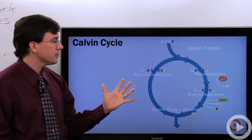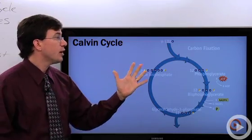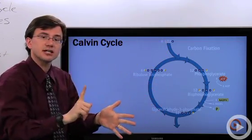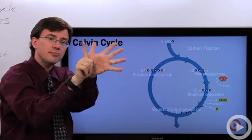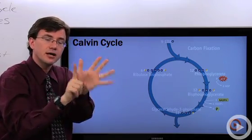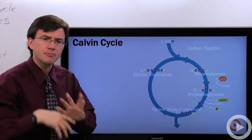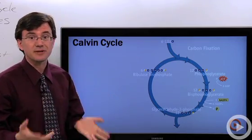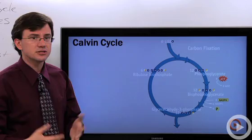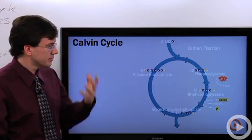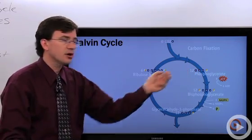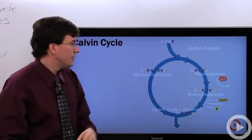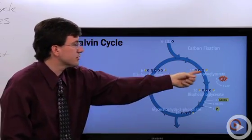So here we have our five carbon ribulose bisphosphate and we ram it together with this carbon dioxide up there which has one carbon in it. That makes a six carbon molecule. Now scientists love to name things. Why don't they name that six carbon molecule? Because it falls apart immediately. It's unstable. So luckily we don't have to remember its name. It breaks apart into a pair of these phosphoglycerate molecules here.